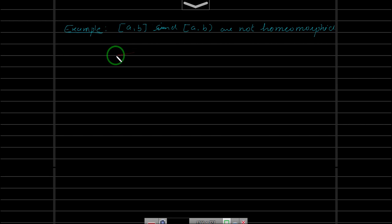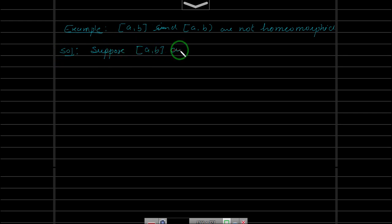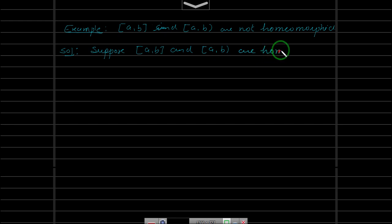There are two ways — let me discuss both here. Suppose they are homeomorphic. Suppose [a,b] and [a,b) are homeomorphic. Let us assume that those are homeomorphic.